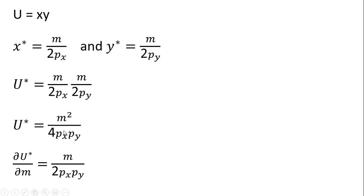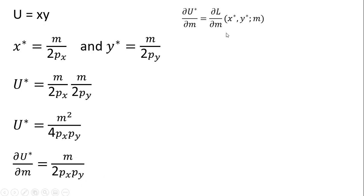If we want to find the effect on maximum utility from a small change in income, we take this partial derivative and get this result. The envelope theorem says we could also get this result by simply taking the partial derivative of the Lagrangian with respect to income and evaluating it at its optimal point.